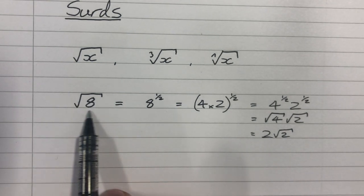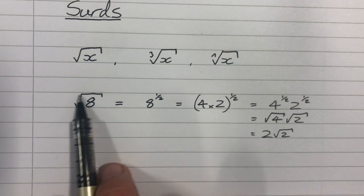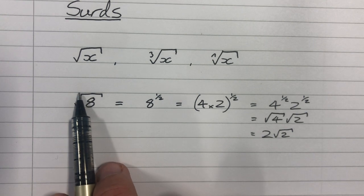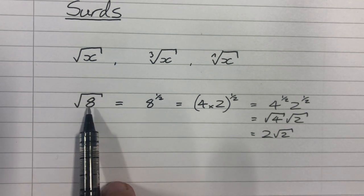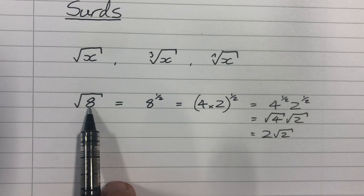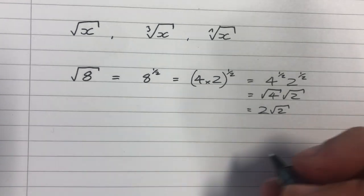And usually we would not leave a surd in an unsimplified form, such as root 8. We would simplify it by taking out the highest square number that's a factor of the contents of the surd. In this case, the highest square number was 4.